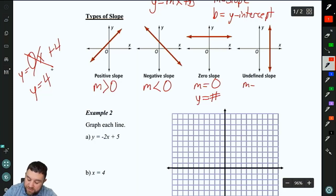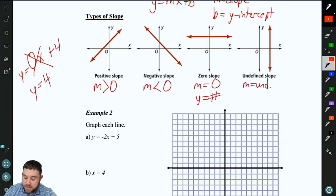And then we have undefined slope where m is undefined. And these are the ones that are x equals a number. So in these, there is no y in our equations. Just x equals 3 or x equals negative 19, something like that. So those are our four types of slope that we can have.